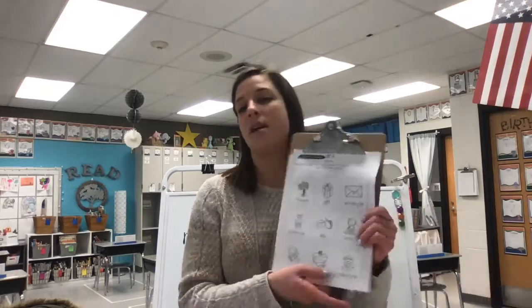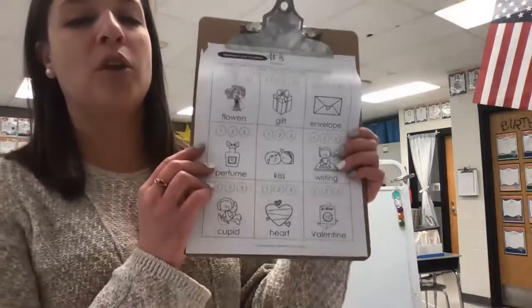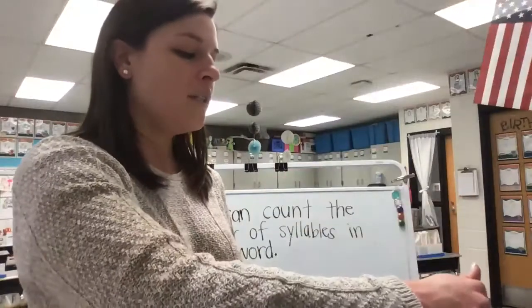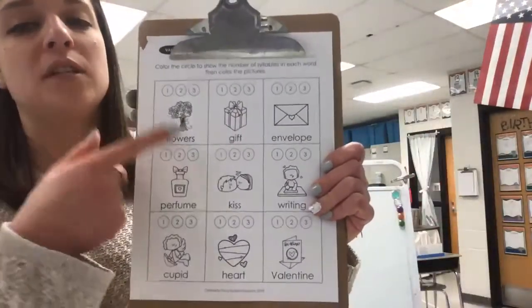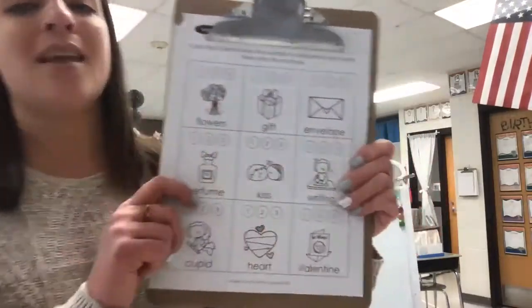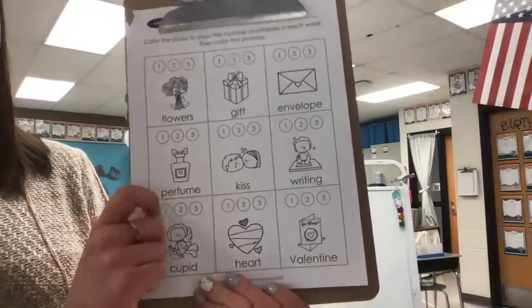We've used our chins, our clapping hands, and our fingers to help us identify those syllables. We're going to use the same strategies today on our activity sheet, and it's actually very similar — exactly like the sheets from earlier this week. So you already know what to do. You're going to color the number of syllables that matches the number of syllables in the word. So let's go through each picture and name what they are. Ready? Here we go.